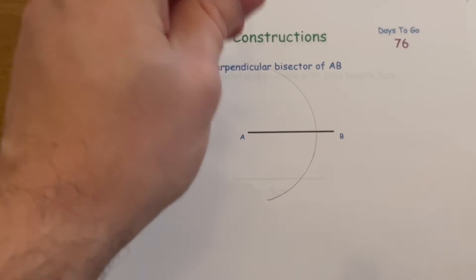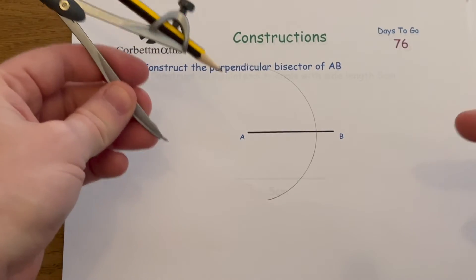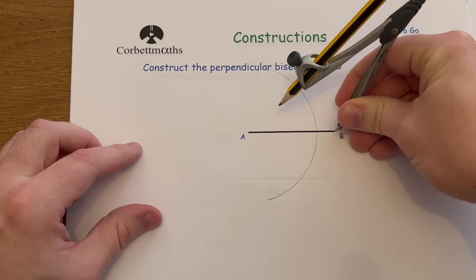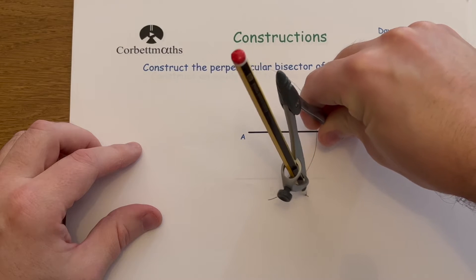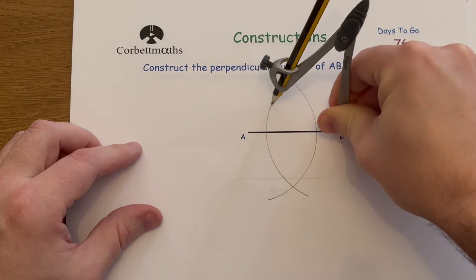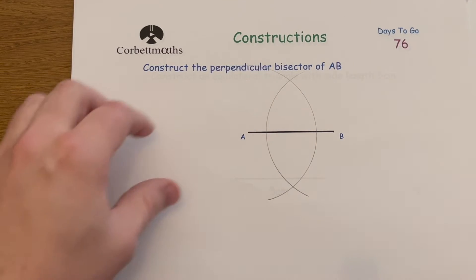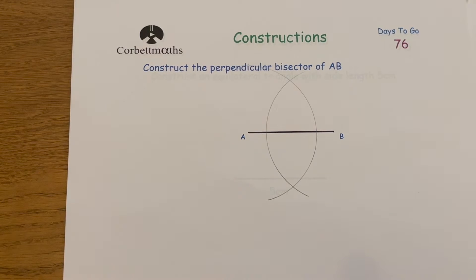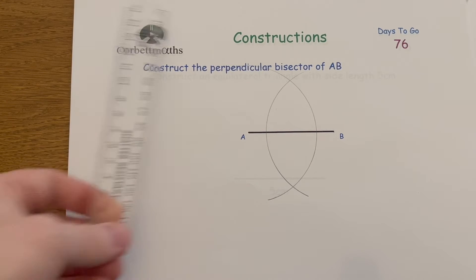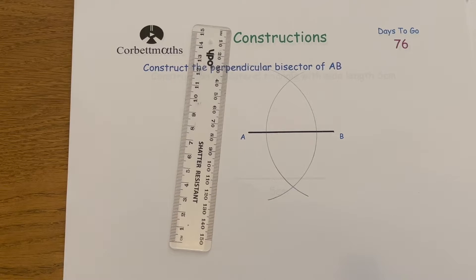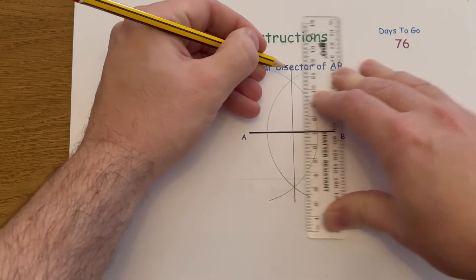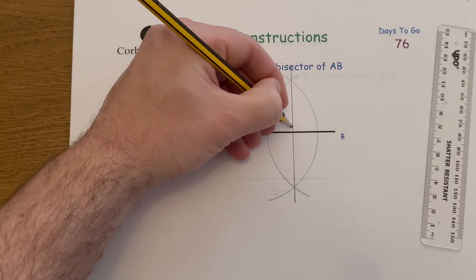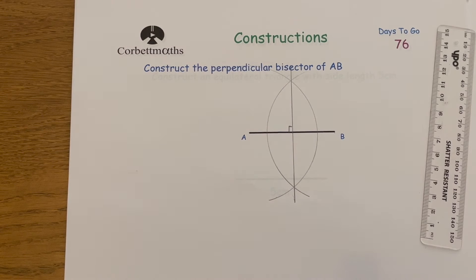Then move the compass to the other side, keeping it the same size — that's very important. Put the point of the compass on B and draw another arc, keeping it over halfway. You can see those two arcs intersect here and here. Get your ruler and pencil and join those two intersection points — that's the perpendicular bisector. It crosses AB at 90 degrees and cuts AB exactly in half.